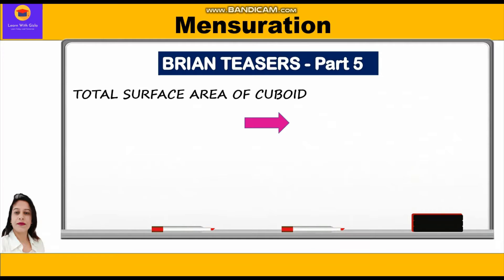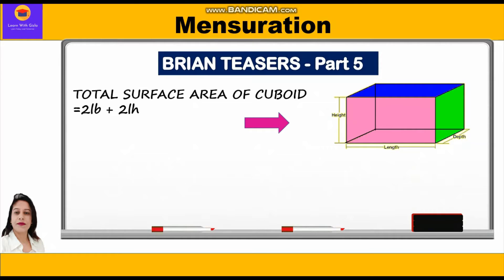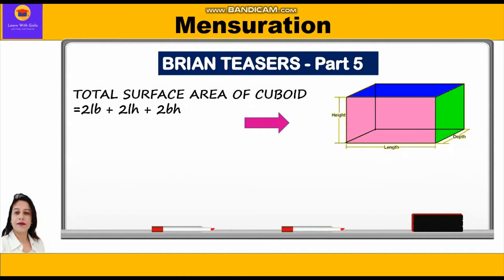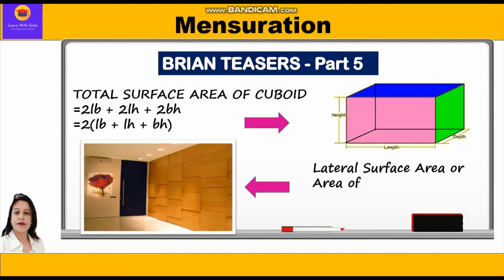Total surface area of a cuboid is equal to twice of length into breadth, plus twice of length into height, plus twice of breadth into height. Taking two common, we write: 2(lb + lh + bh). This is the total surface area formula.